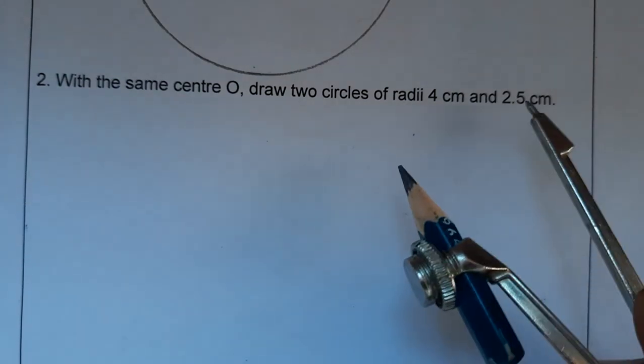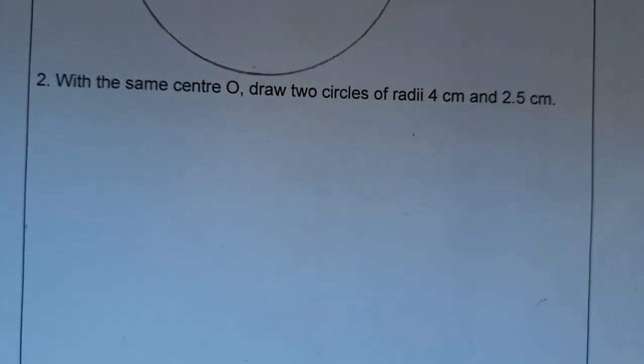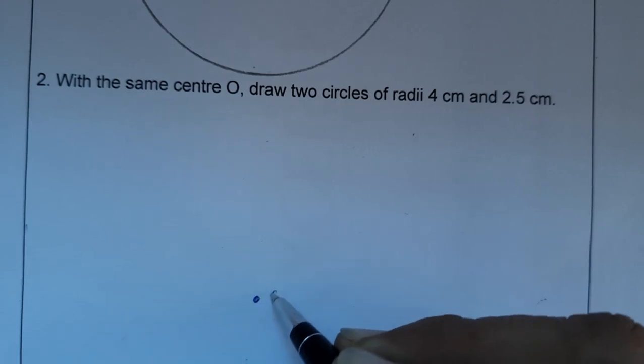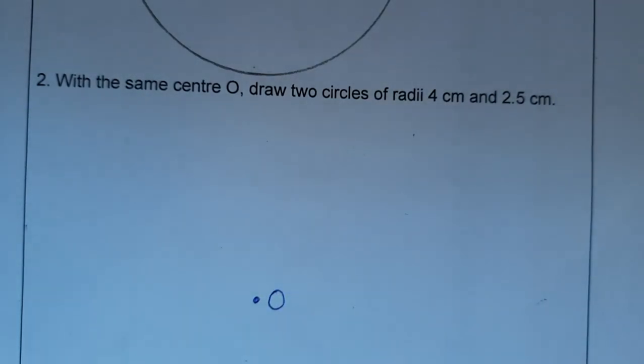First of all, again we are going to mark one point. This I have marked, the point center O. Now, should we take radius 4 centimeter or 2.5? So let's make 2.5.